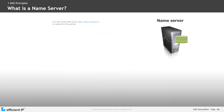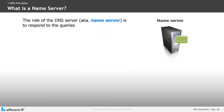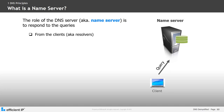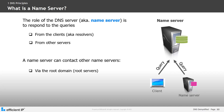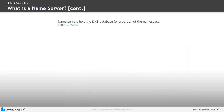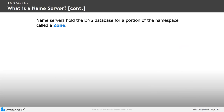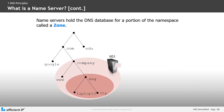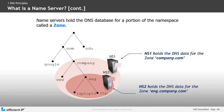A DNS server is known as the name server. Its role is to respond to queries from clients, also known as resolvers, and from other name servers. A name server can contact other name servers via the root domain or root servers, or via forwarders. The name servers hold the DNS database for the portion of the namespace called the zone. For example, NS1 holds the DNS data for the zone company.com, while NS2, a subdomain of company.com, holds the data for the zone eng.company.com.